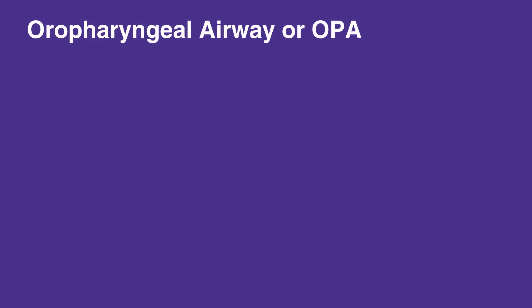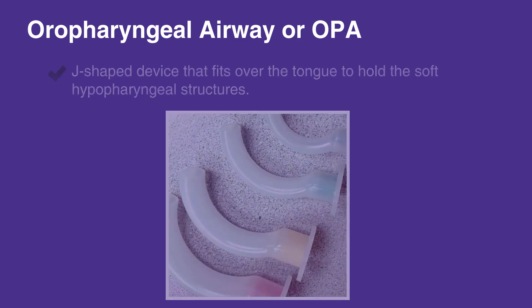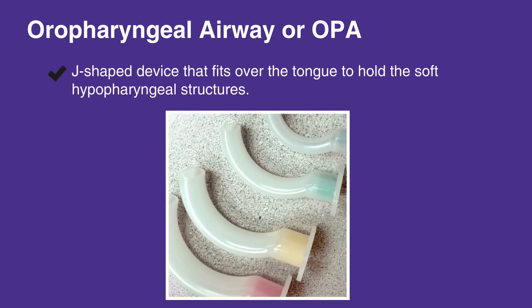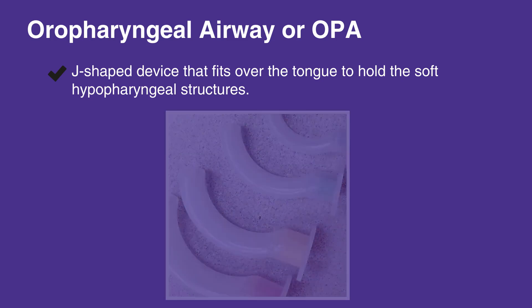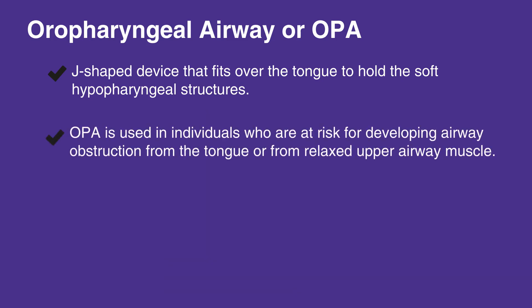The oropharyngeal airway, or OPA, is a J-shaped device that fits over the tongue to hold the soft hypopharyngeal structures and the tongue away from the posterior wall of the pharynx. The OPA is used in individuals who are at risk for developing airway obstruction from the tongue or from relaxed upper airway muscle.